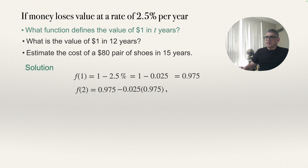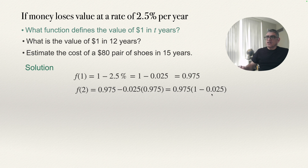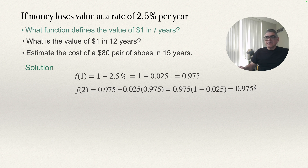So that will be $0.975 multiplied by (1 minus $0.025), which gives $0.975 again. So this is actually $0.975 multiplied by $0.975, which is $0.975 squared. What we notice is that we just need to multiply the previous value times $0.975.